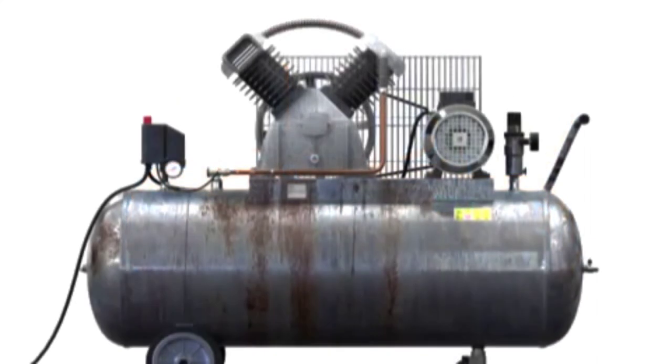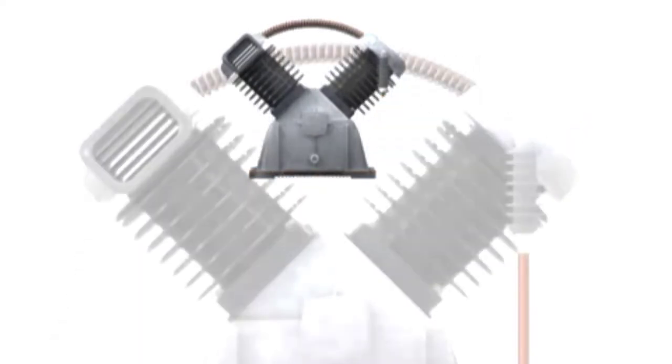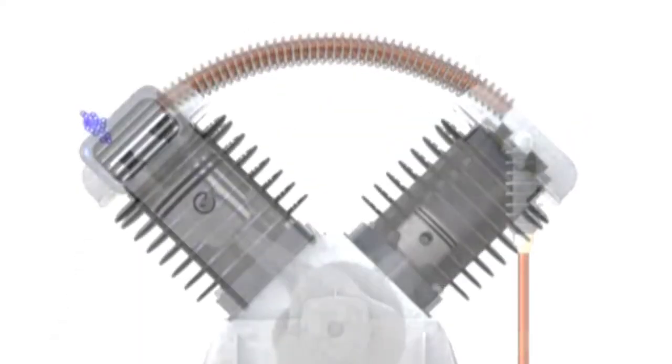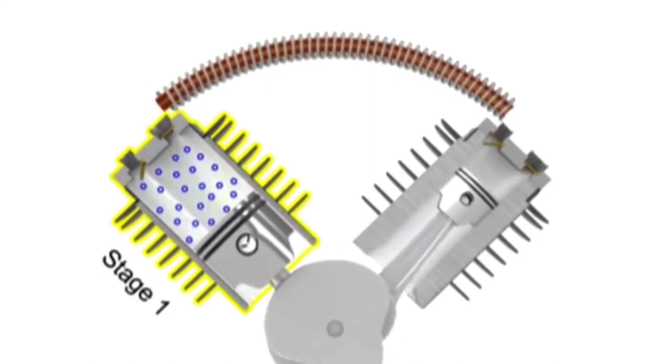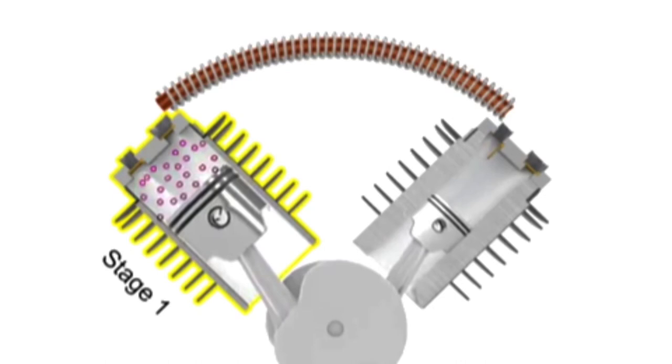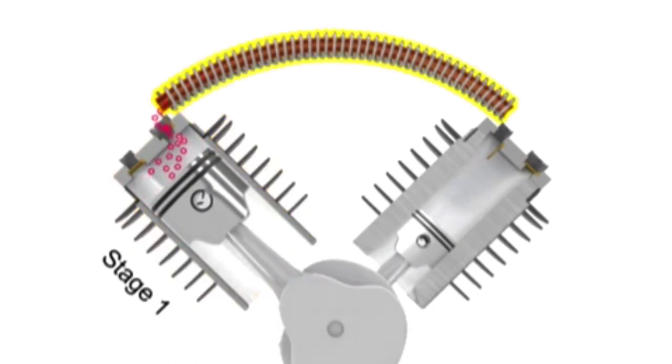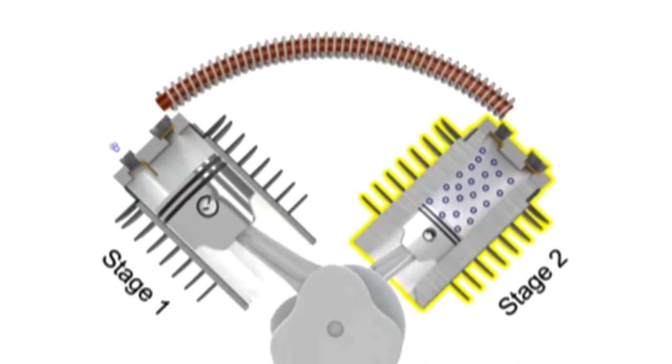To avoid the hazards of overheating and still generate higher pressures, manufacturers make compressors with multiple stages. The air is compressed in the first stage, which is typically the largest stage, then cooled, then compressed in a second stage.